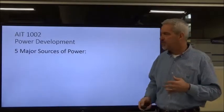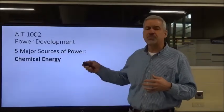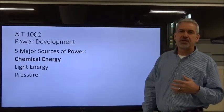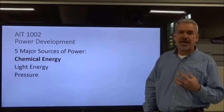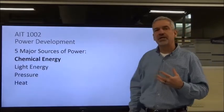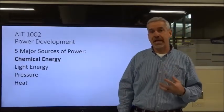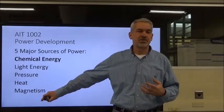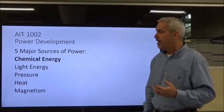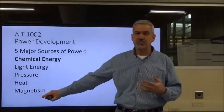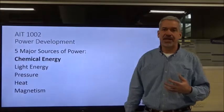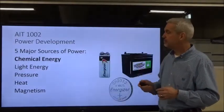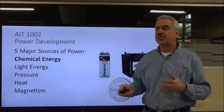There are five major sources of electricity. The first one we're going to talk about is chemical energy, then light energy, energy created from pressure, energy and electricity created from heat, and then magnetism. Magnetism is the one we're going to go into the most in depth in this class — we're going to spend a lot of time on how magnetism impacts electricity production and consumption. So let's get started with chemical energy.